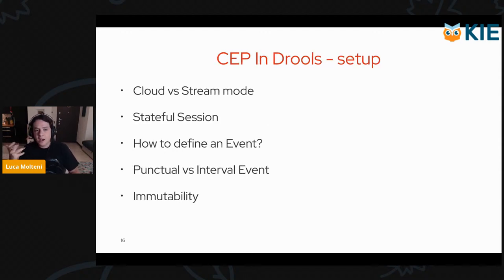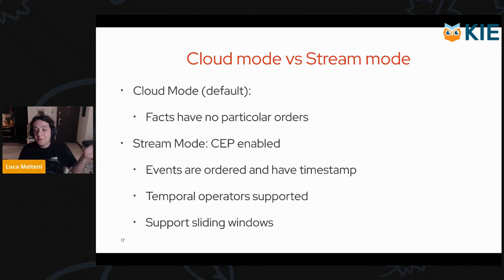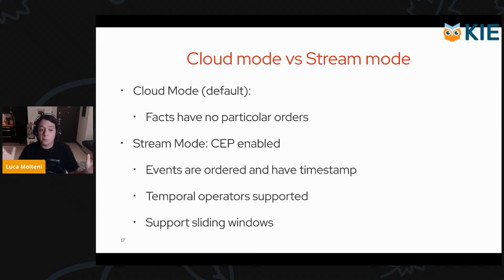Let's discuss some of the details and how CEP is actually implemented in Drools. Firstly, we should talk about evaluation mode in Drools. By default, Drools runs in a mode called Cloud mode. Cloud mode is the default, in which facts don't have any particular order, and you basically cannot use CEP with Cloud mode. To use CEP, you have to enable what is called Stream mode, in which every event inserted in Drools will have an order and a timestamp. You can then use temporal operators and other features such as sliding windows.